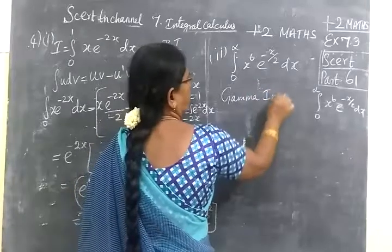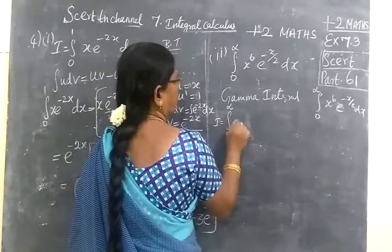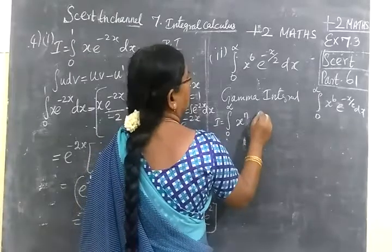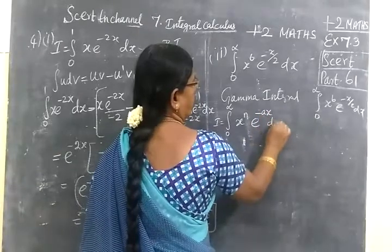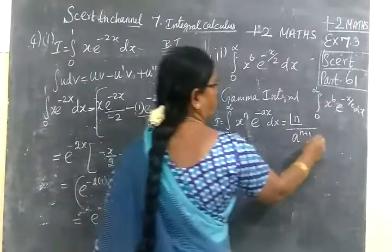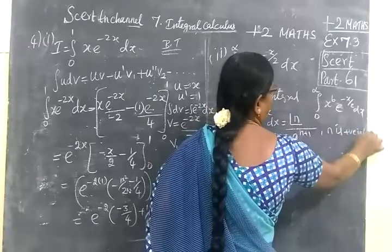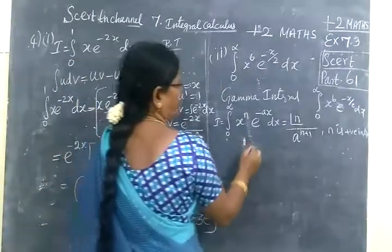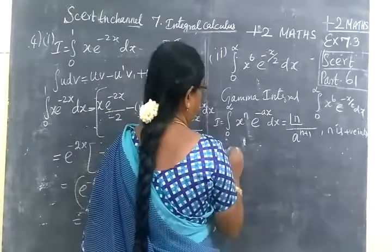Gamma function formula: integral 0 to infinity, x power n times e power minus ax, dx equals factorial n divided by a power n plus 1, where n is a positive integer.